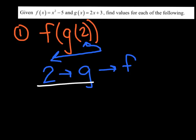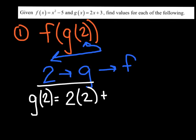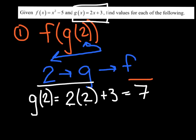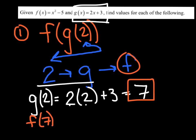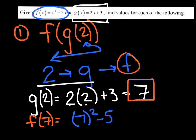The first thing I want to find is 2 into g, which is read g of 2. So I'm going to find g of 2, which is 2 times 2 plus 3. I'm picking the g function and substituting 2 in for x. The output: 2 times 2 is 4, plus 3 is 7. Now I'm going to take g's output and substitute that into f. So I'm going to find f of 7, plugging 7 into function f, using parentheses: (7)² − 5 = 49 − 5 = 44.